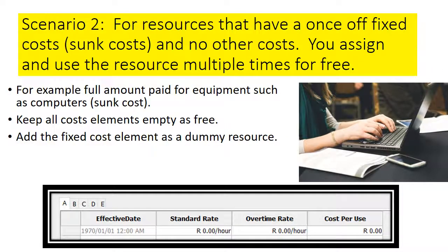A second scenario is for resources where you have a fixed cost once and no other cost, but you assign this multiple times over the course of the project and then use it for free. For example, the sunk cost of a computer or printer you already paid for. In this case, use the cost per use for every assignment, set the rate to zero, and handle the fixed cost as a dummy resource that you only assign once.